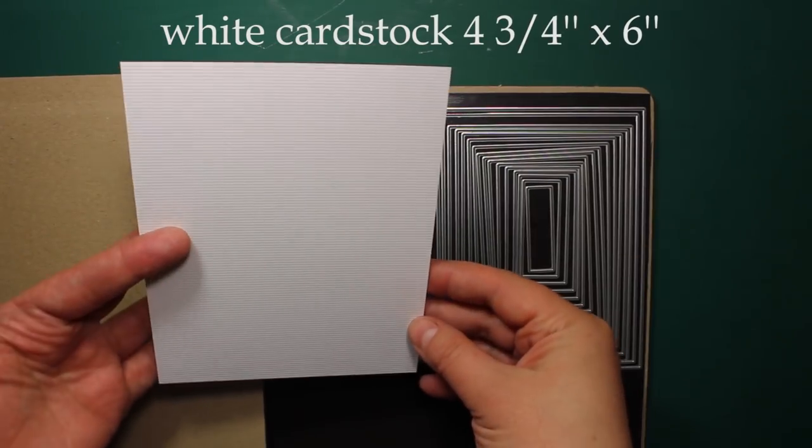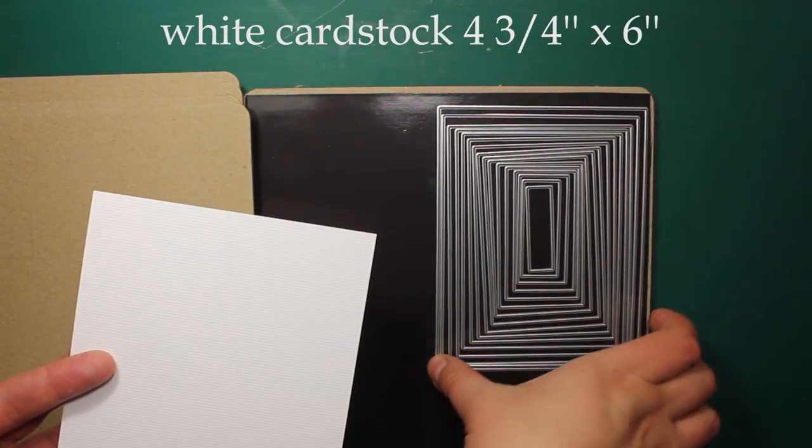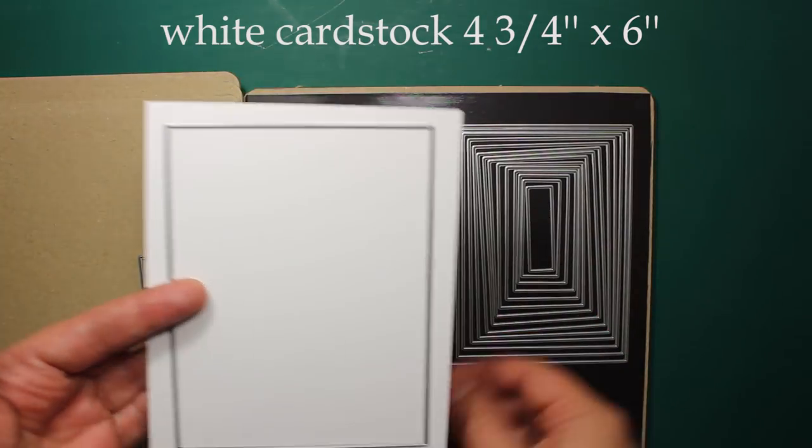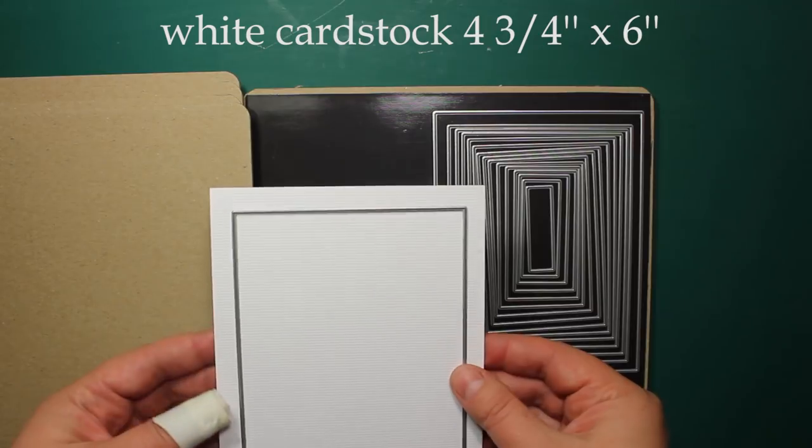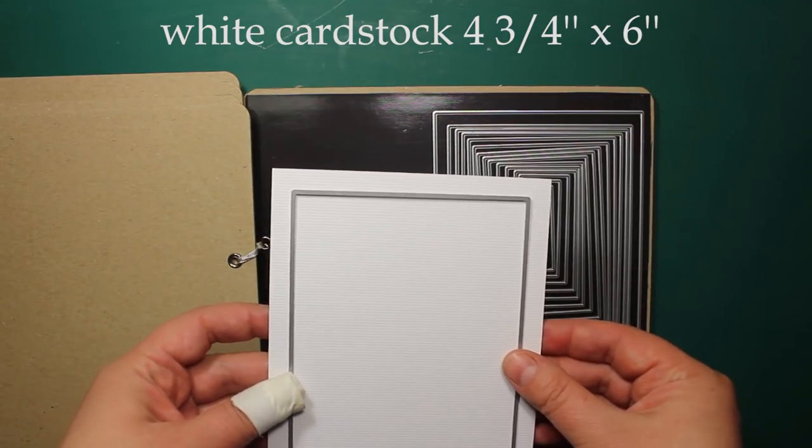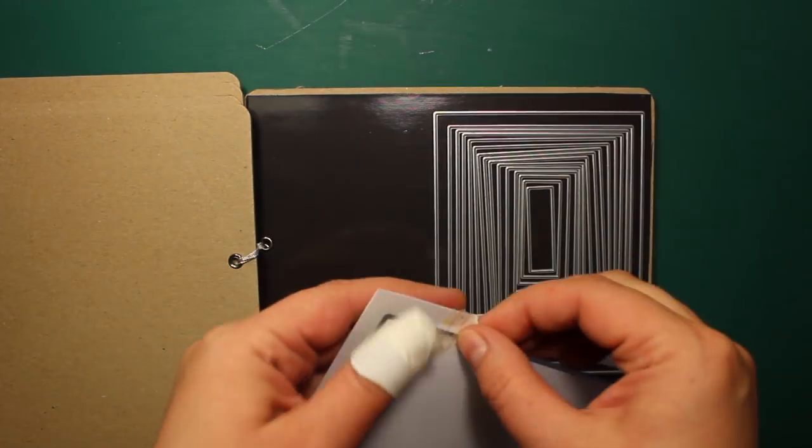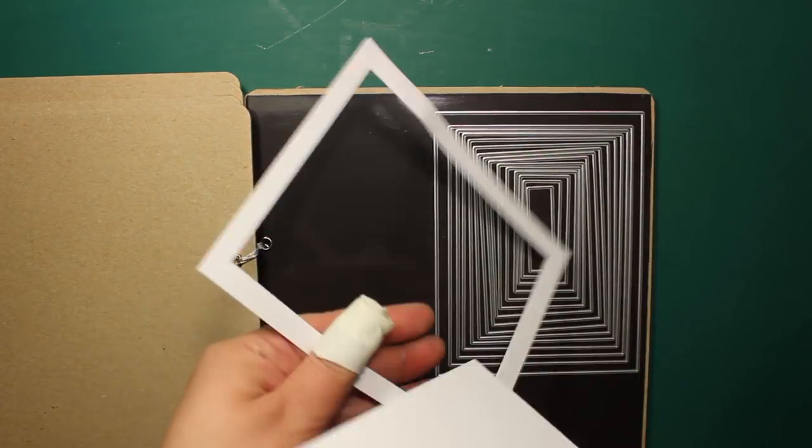I have started with a piece of white cardstock slightly larger than the standard A2 format. Then I am going to use a second largest die from Rectangle Basics set by Memory Box to create a frame. If you are interested in the products that I am using, you can find the link to the supply list in the description.